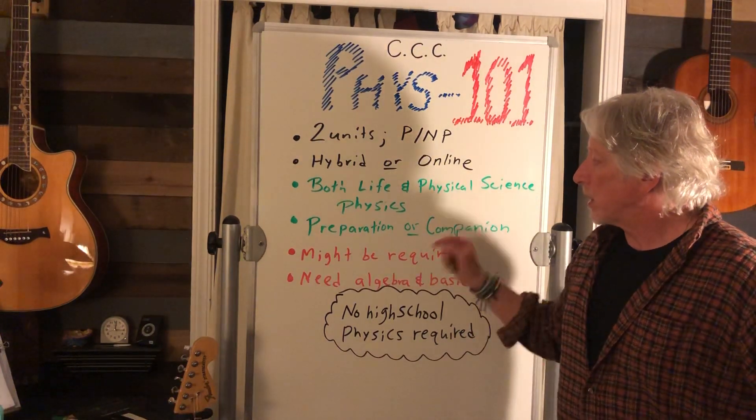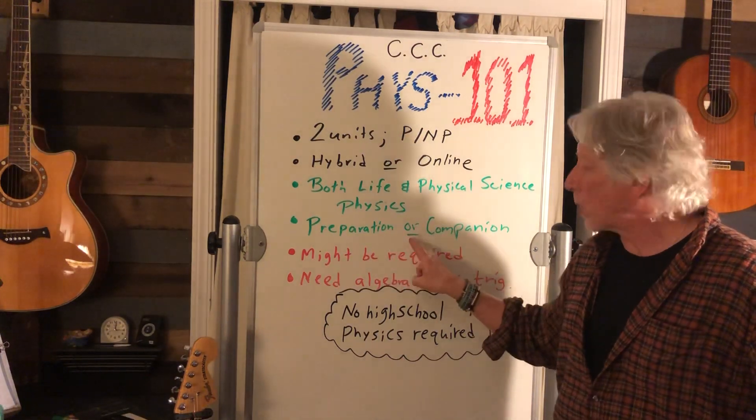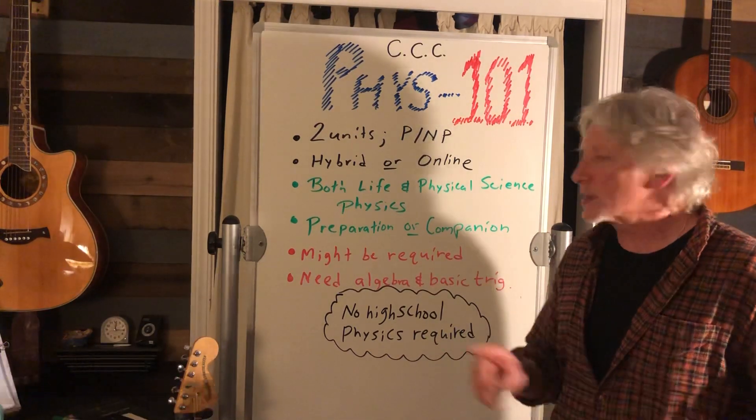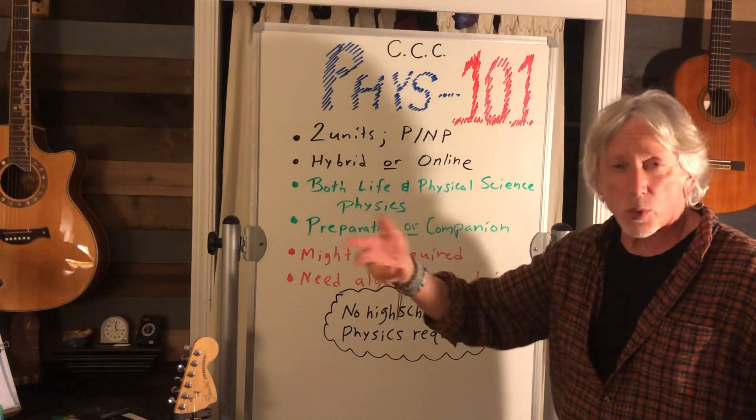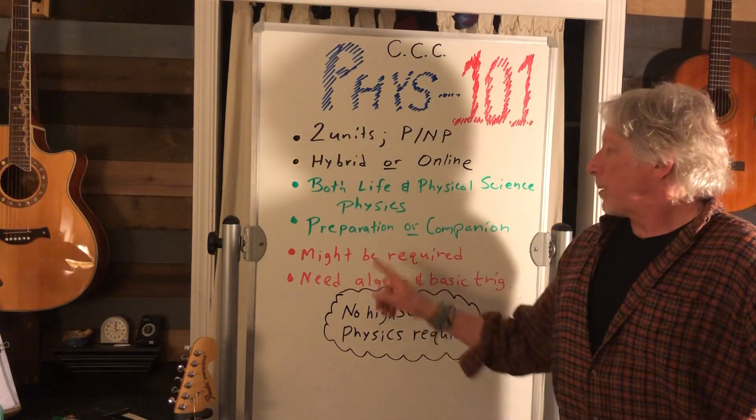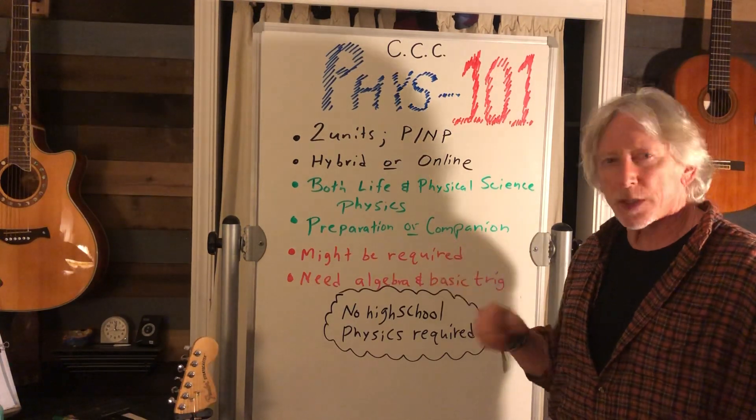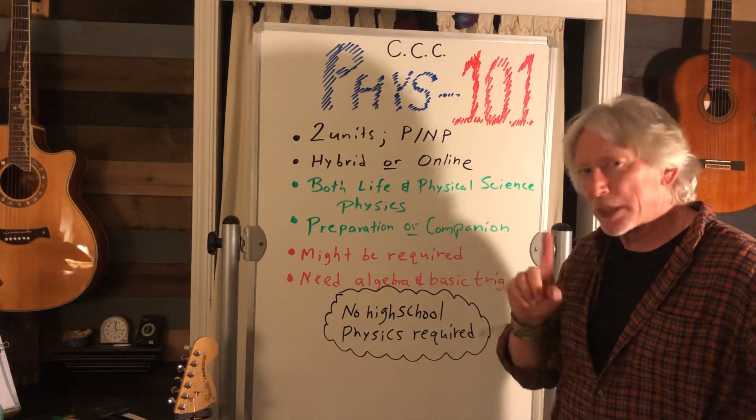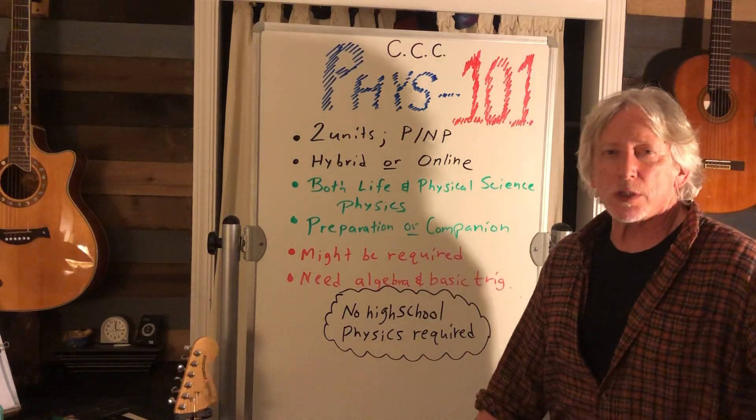This course is a preparation for these courses or a companion. The ideal approach is to take it before you've taken your physics courses. The semester before or the summer before is ideal. However, it can be taken with the first semester course, you'll just have to make sure you've got time and it will support that. But really the ideal is this way. It might be required and will be required at Contra Costa College.